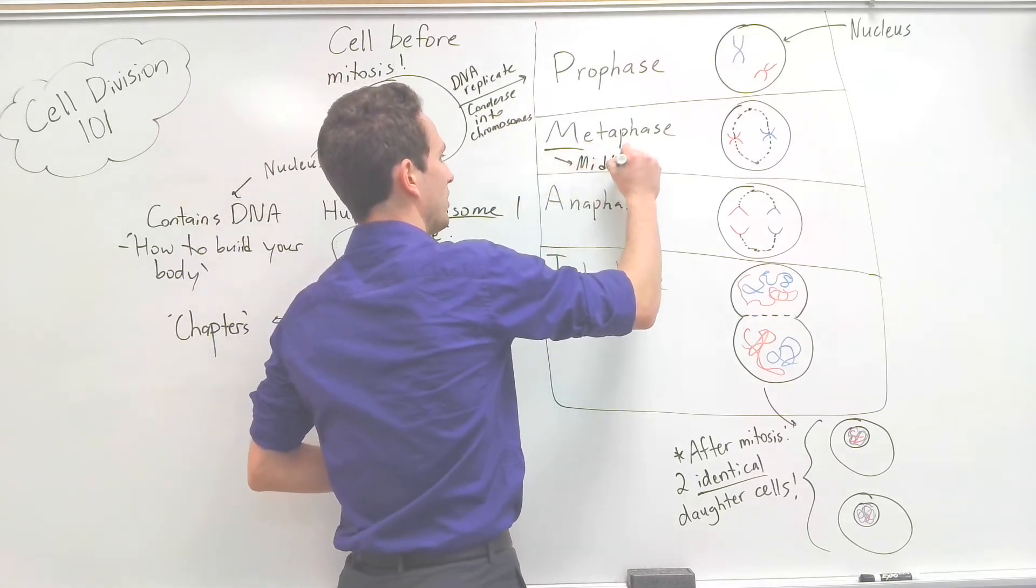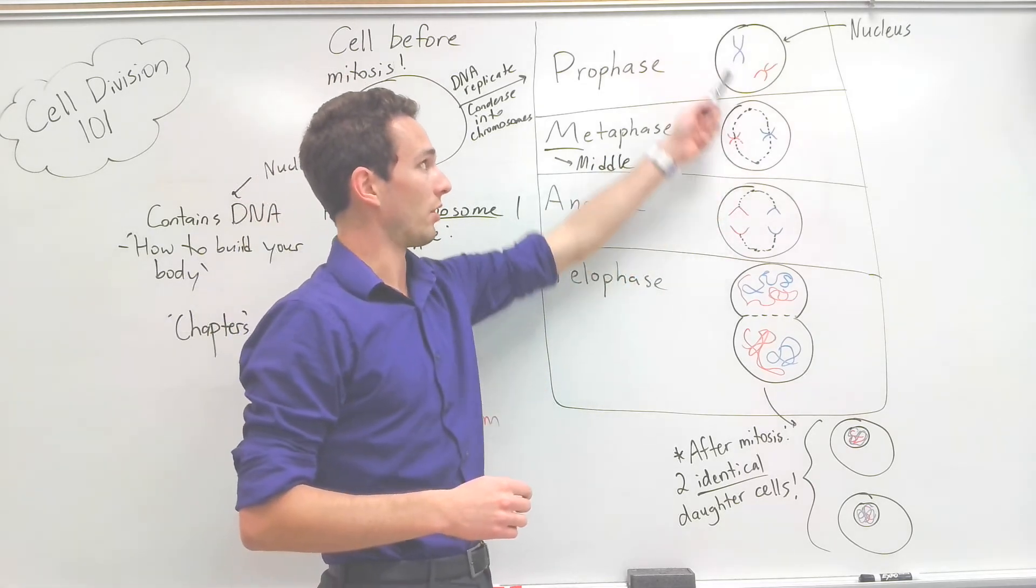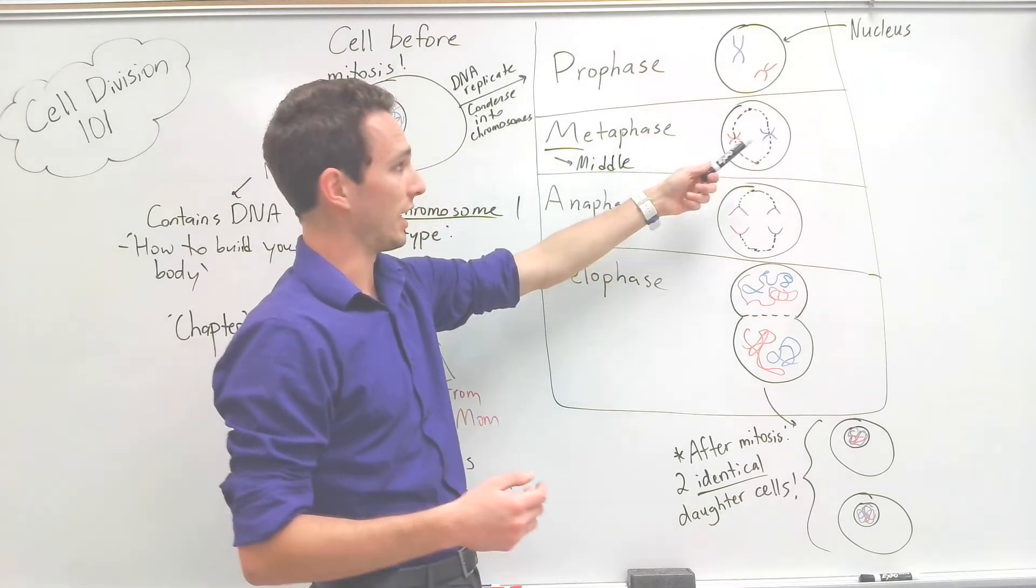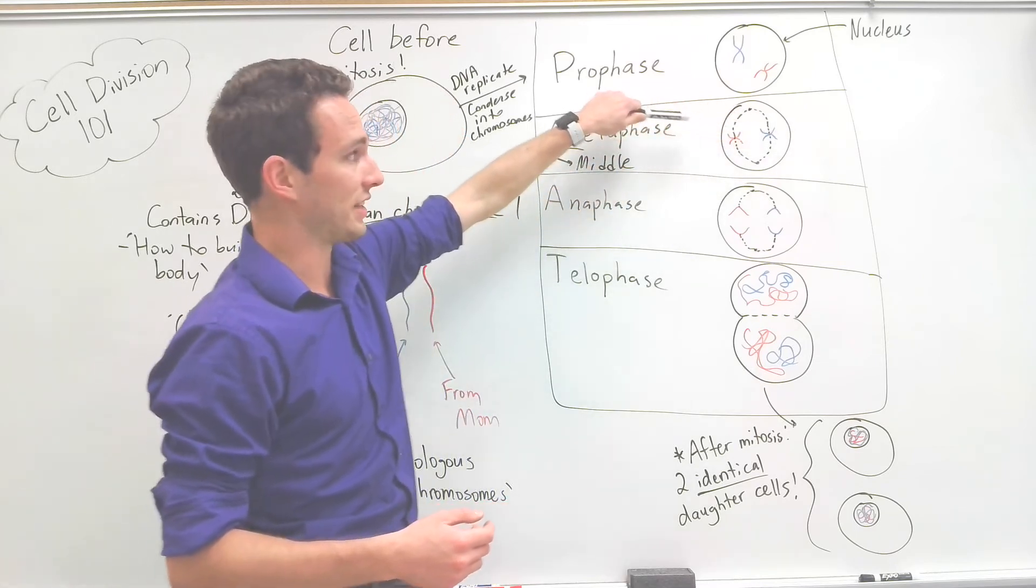Metaphase has an M. This stands for middle. At this point in mitosis, the chromosomes that have already replicated—so we've got two from mom, two from dad, because they replicated—and they are going to be aligned at the middle. It's called the equatorial plate.